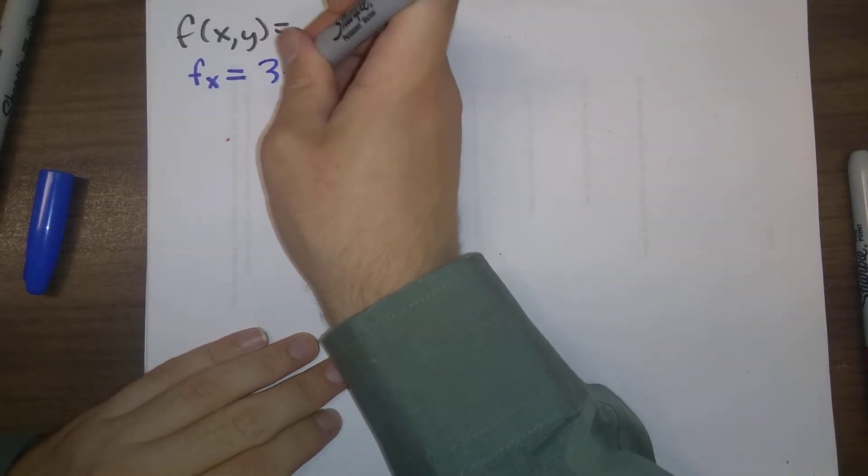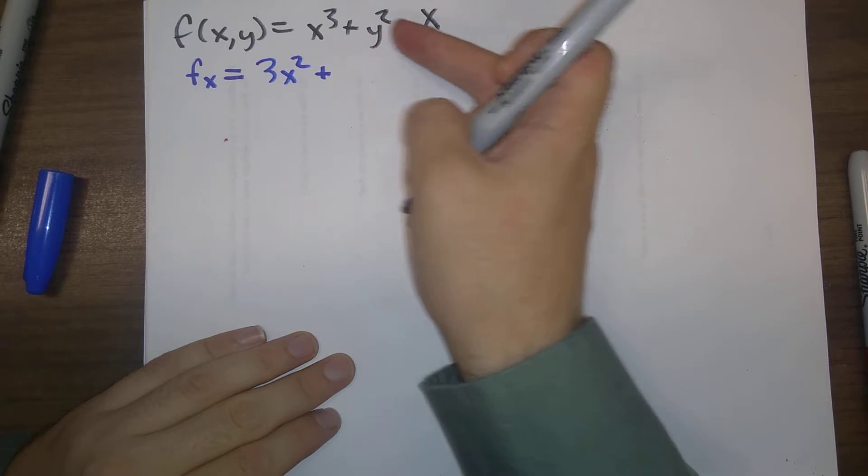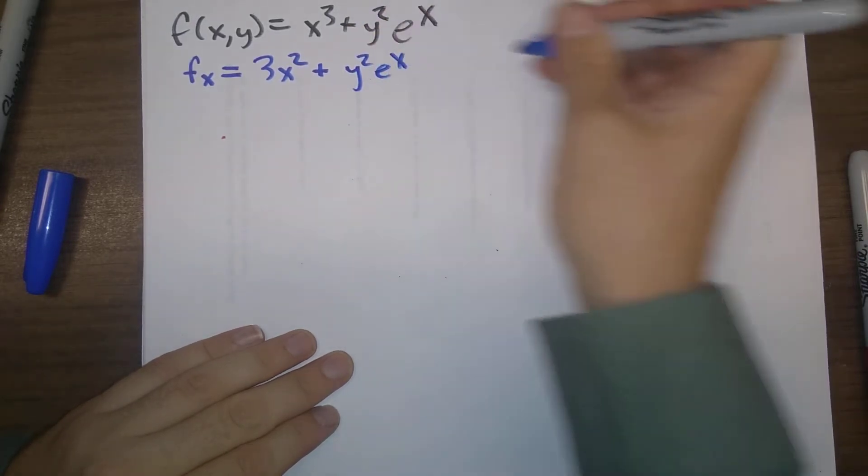So the x derivative here would be 3x^2 plus y^2 is a constant here, so plus y^2 times e^x.